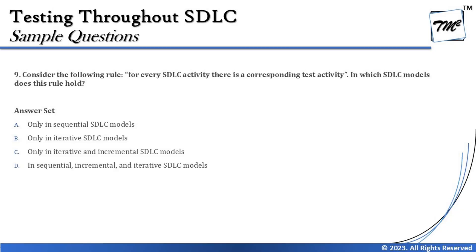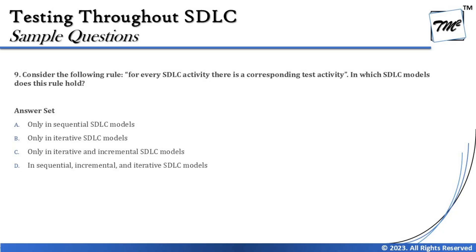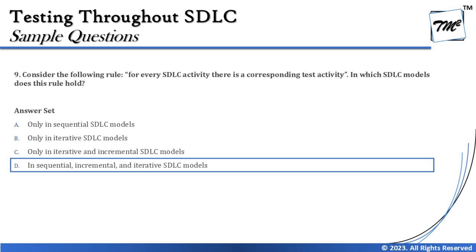Just quickly look at the options because sometimes these questions do not go straightforward without the options. The options here are: A — only in sequential SDLC models, B — only in iterative SDLC model, C — only in iterative and incremental. As far as the word 'only' is used here, you can make a difference — these good practices are applicable to any development model, so 'only' should not prefix any option.